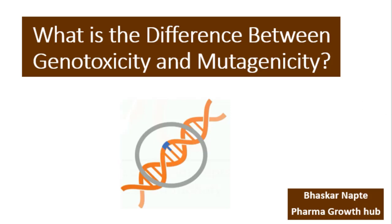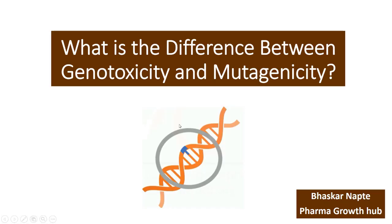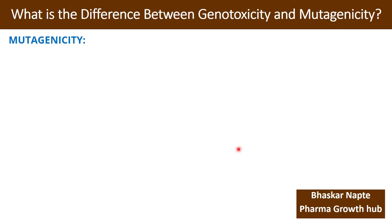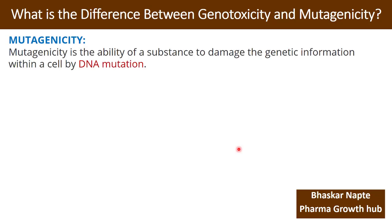Let us begin with the presentation. First, let us understand the definition of mutagenicity. Mutagenicity is the ability of a substance to damage the genetic information within a cell by DNA mutation. If a substance has the ability to mutate DNA, that substance is called a mutagenic substance.